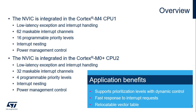The Cortex-M4 CPU1 main features are 62 interrupt sources and 16 programmable priority levels. The Cortex-M0 Plus CPU2 main features are 32 interrupt sources and 4 programmable priority levels.